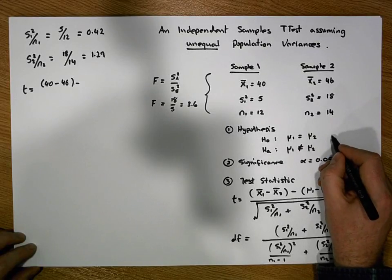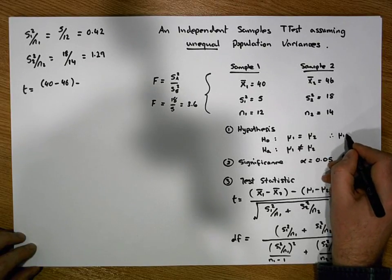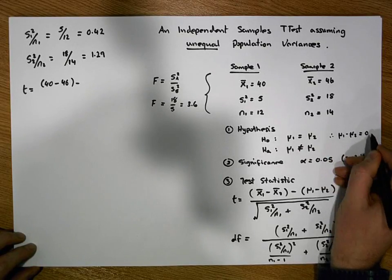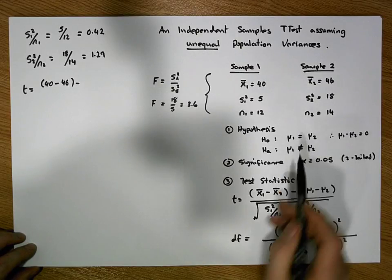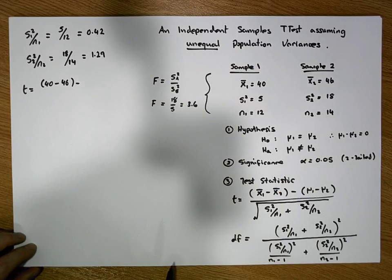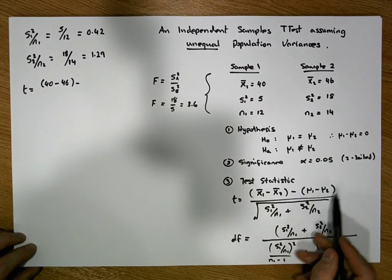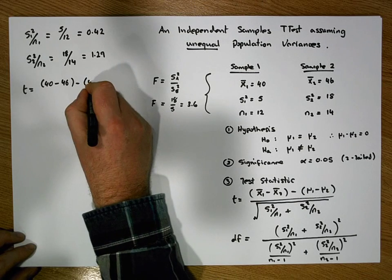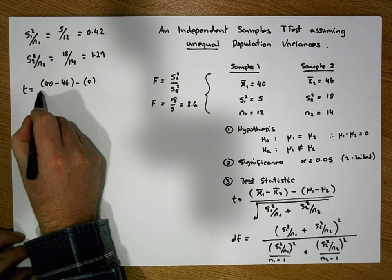Which then tells us that μ1 minus μ2 must be equal to 0 when we bring μ2 over to the left-hand side. So under the null hypothesis μ1 minus μ2 is 0, so what we're going to do is we're going to take away 0 here, which has no effect on the numerator.